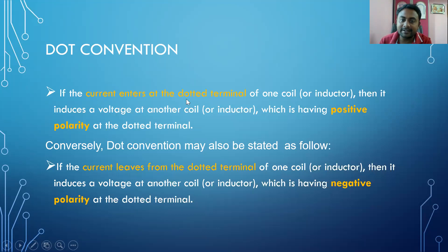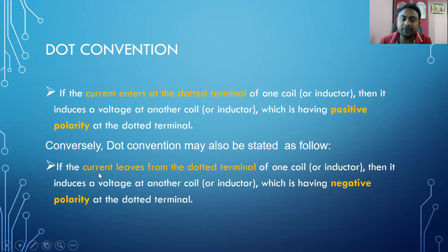If current enters at the dotted terminal of one coil of an inductor, then the induced voltage in the other coil is having the positive polarity. Vice versa — if current leaves from the dotted terminal of one coil, then the induced voltage at the other coil is having the negative polarity. Entering means positive polarity; leaving means negative polarity.